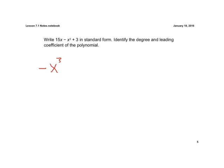Then we look for an x squared. Well, we don't have an x squared, so we move on to 15x. So plus 15x, and then plus 3. This is in standard form because the highest exponent is to the left and we go down from left to right.